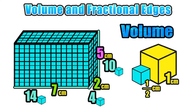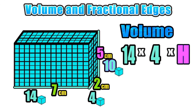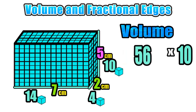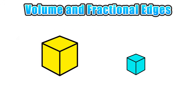To find the volume of the figure in terms of one-half centimeter unit cubes, we use the same formula: volume equals length times width times height. Substituting 14 and 4 for the length and width, and 10 for the height, we multiply: 14 times 4 gives an area of the base of 56, and 56 multiplied by 10 gives us 560. So the volume of the figure expressed in half-centimeter cubes is 560.